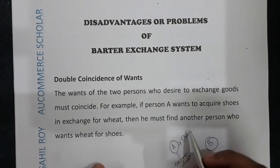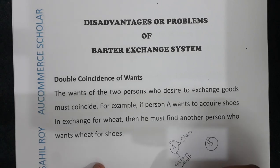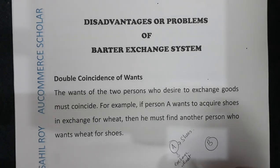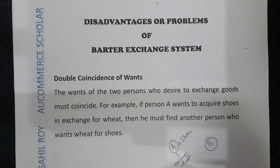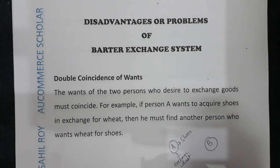He must find another person who wants wheat to exchange goods. So this was a big problem — double coincidence of wants. Most of the time, finding a person whose wants exactly matched yours was very difficult. For example, if I need shoes, I must find someone who both has shoes and also wants wheat in return.